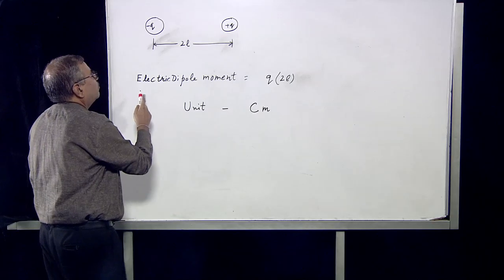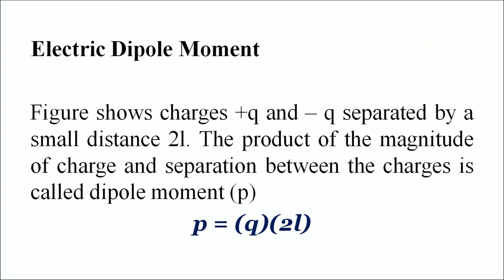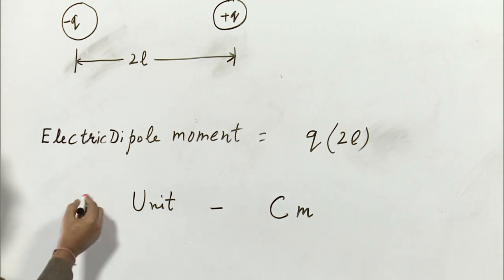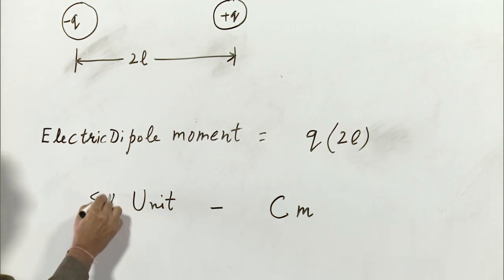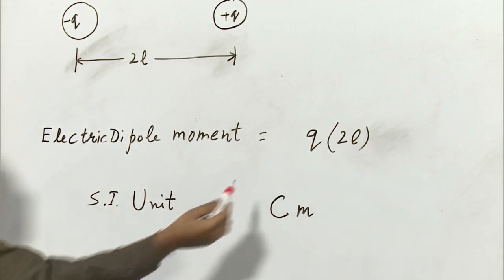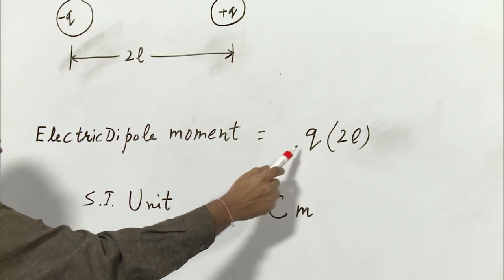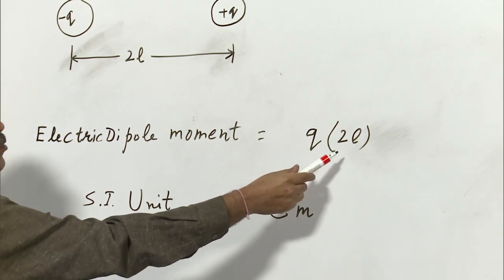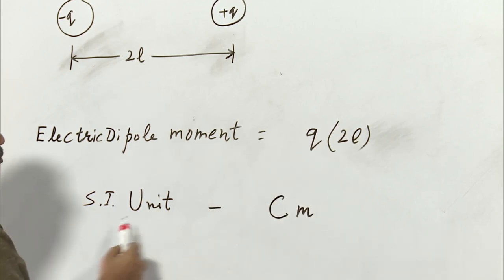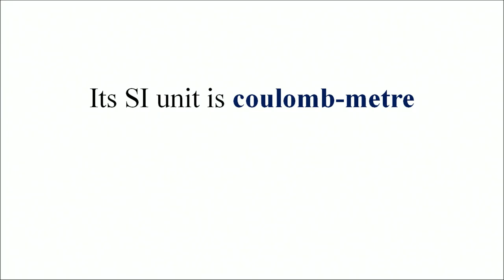Let us calculate the electric dipole moment in this case. Electric dipole moment will be equal to either charge into the distance between them, so it will be Q into 2L. The SI unit of the dipole moment will be the unit of Q into unit of 2L. Q is measured in coulomb and 2L is measured in meters, so the SI unit will be coulomb meter.